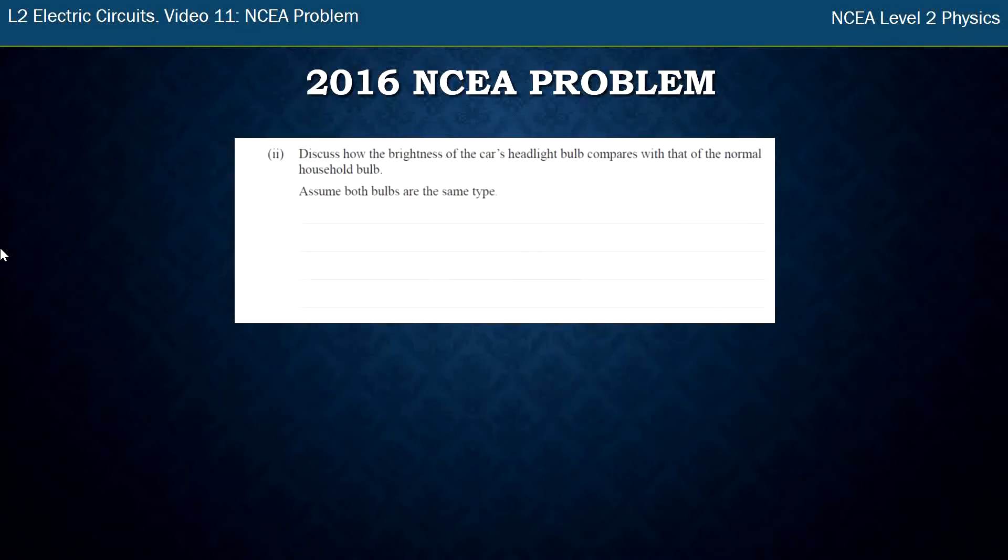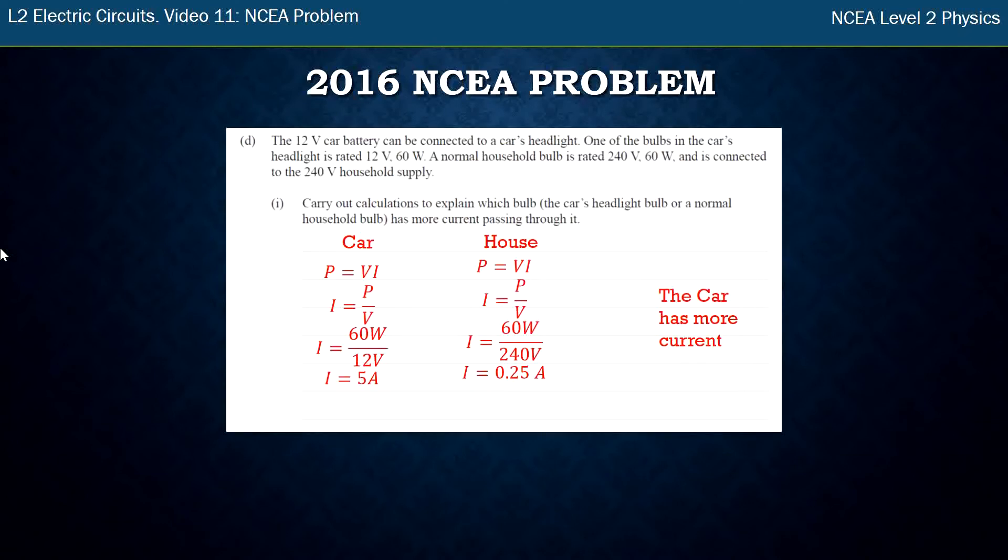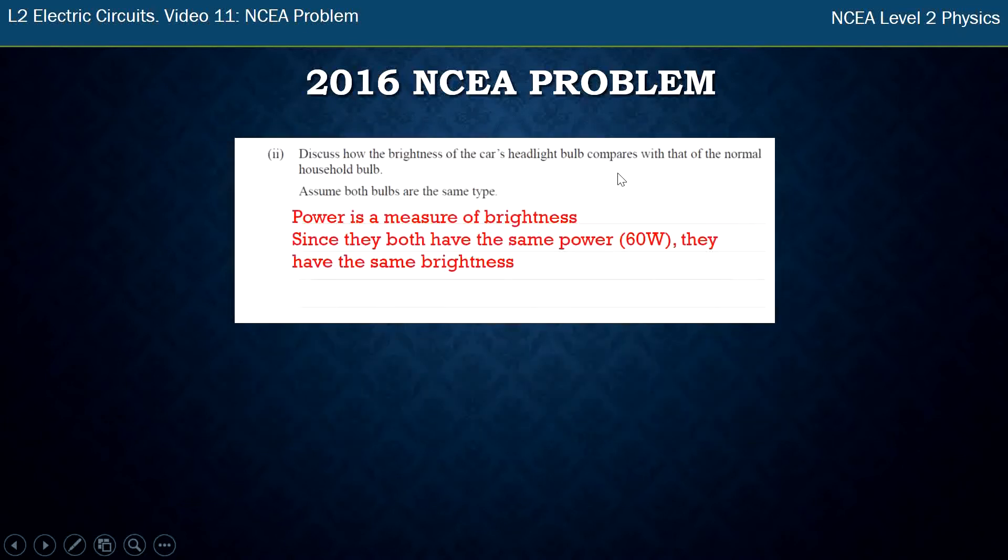Discuss how the brightness of the car's headlight compares to that of the normal household bulb. So they're both 60 watt bulbs. Power is the measure of brightness and they both have the same power therefore they both have the same brightness. So that question with this question together was the excellence.